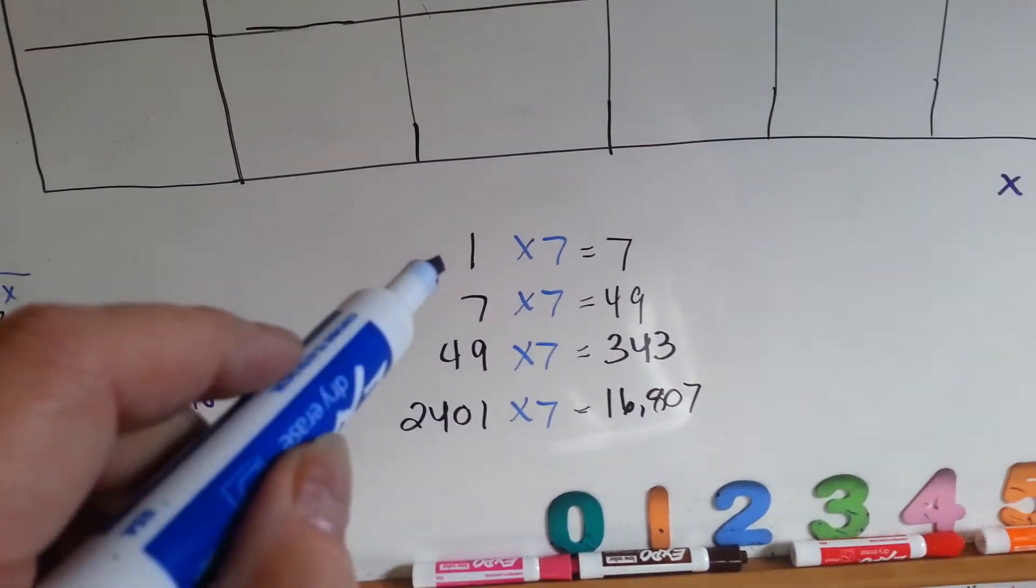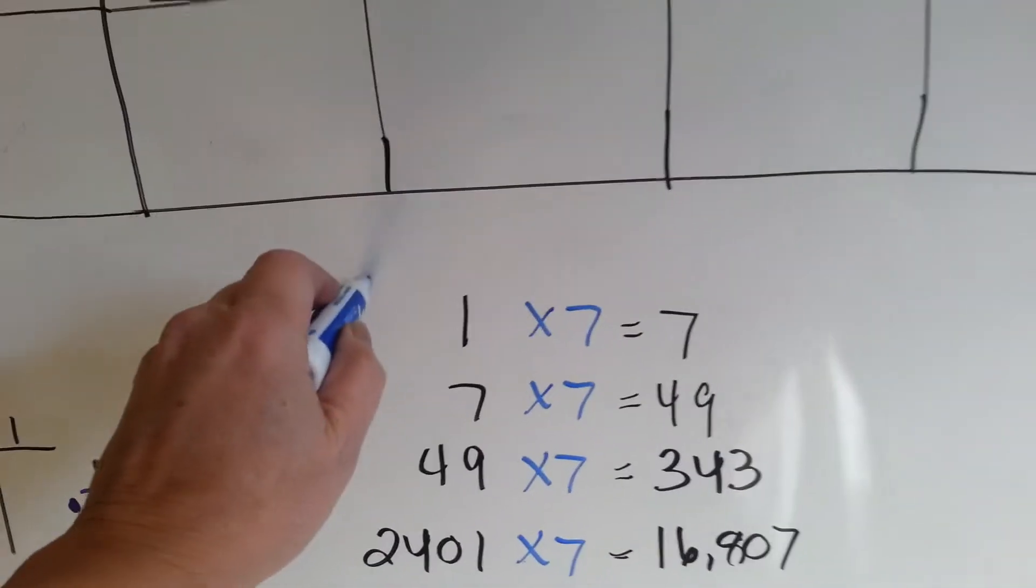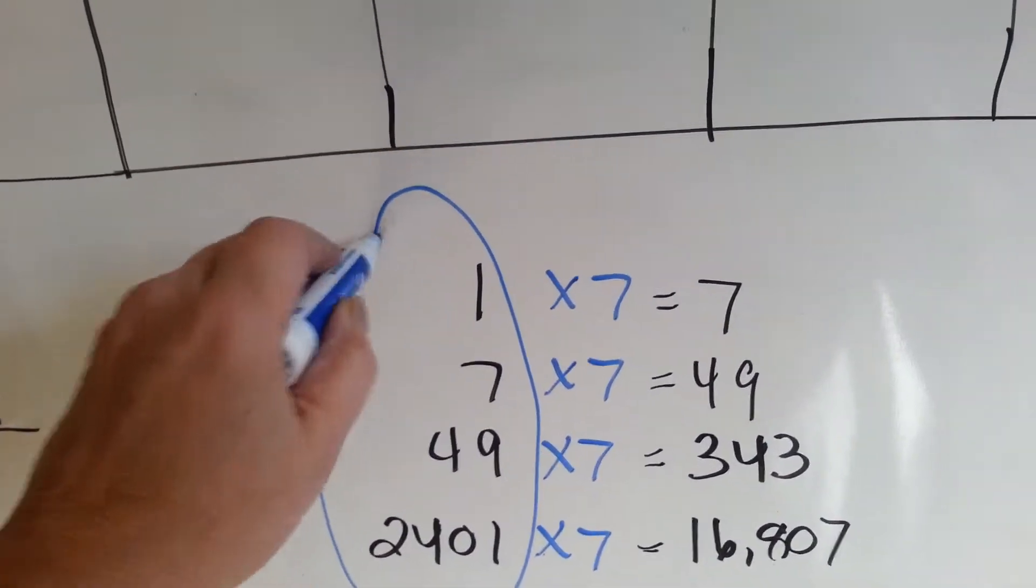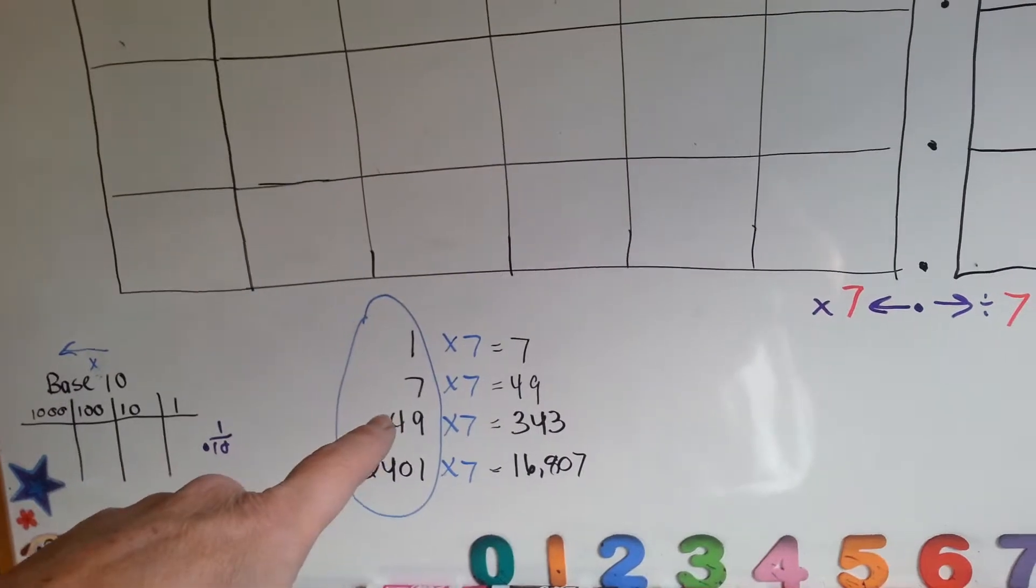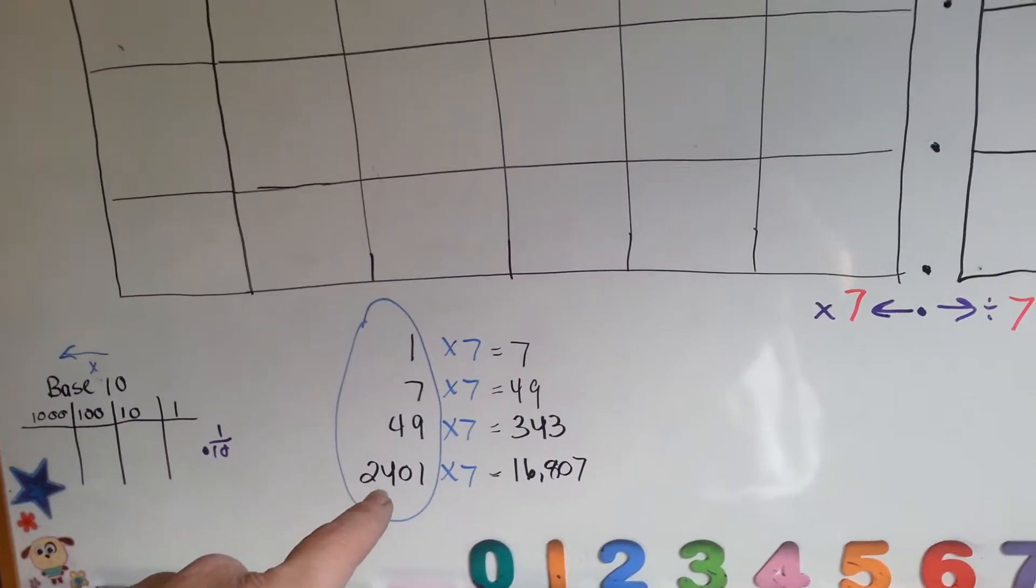So, these would be the columns that we would have for base seven. We'd have our ones column, our sevens column, our forty-nines column, and our 2401s column.